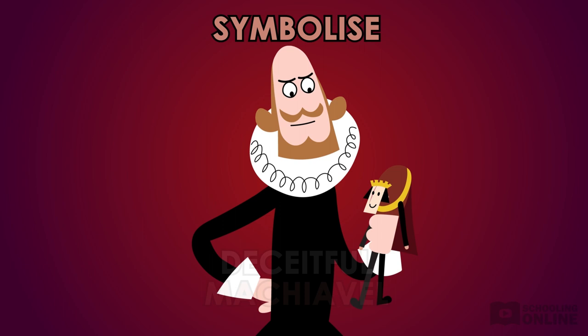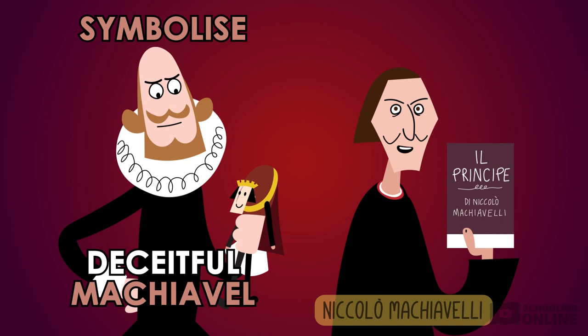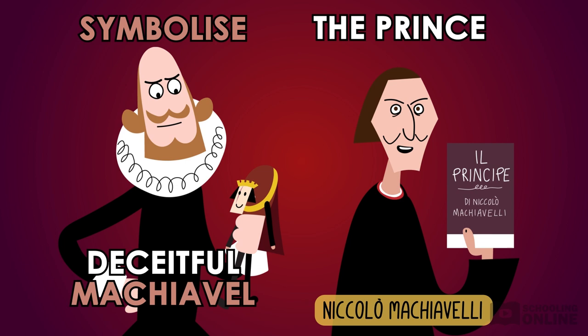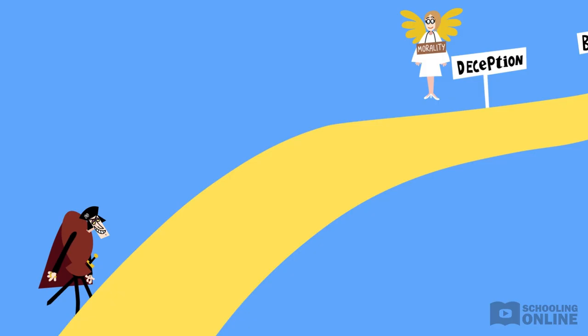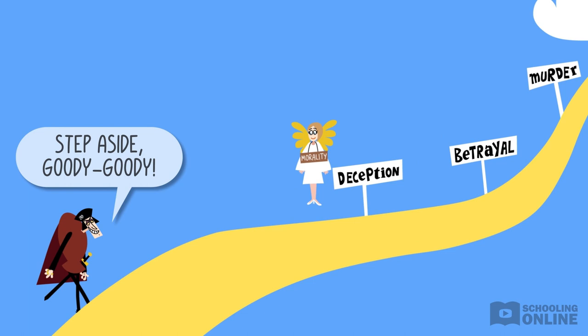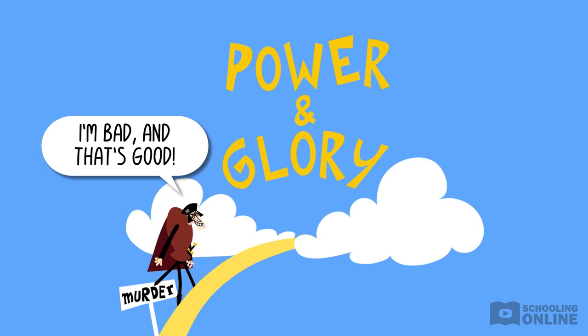The word Machiavelle derives from the name of Italian political theorist Niccolò Machiavelli. His most famous work, The Prince, circulated widely in Elizabethan England, so it's highly likely that Shakespeare was familiar with it. A Machiavelle is someone who puts morality aside and does whatever is necessary to secure their power. According to Machiavellian philosophy, the odd act of cruelty is okay when you're on the path to power and glory, as long as the cruelty is well-used. Some call this the basis of modern political science; others call it plain evil.